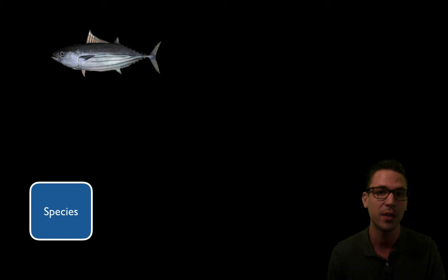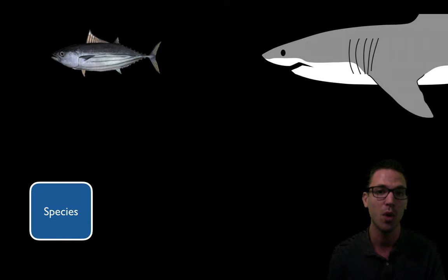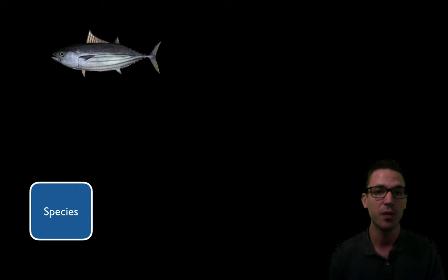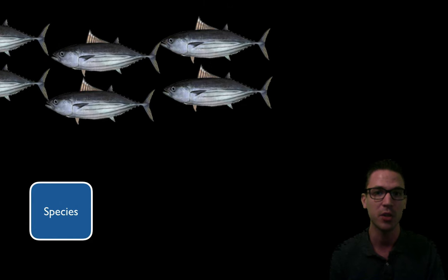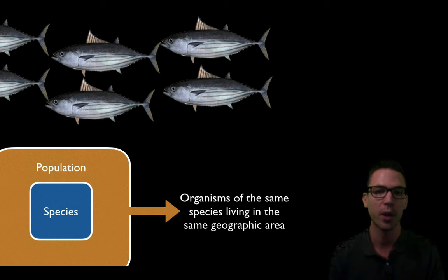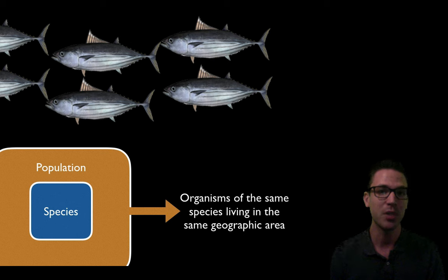Take the great white shark — its niche in its environment is that of an apex or top predator. Every single species has a particular niche or role it fulfills within its ecosystem. Now if we take a bunch of individuals of the same species, say tons of skipjack tuna, we're at the next level of organization, which we call a population. A population is organisms of the same species living in the same geographic area at the same time. Populations are adapted to specific geographic areas, and that area is called the habitat.